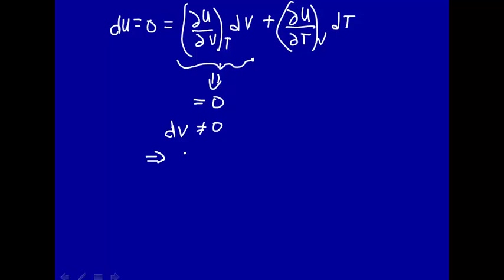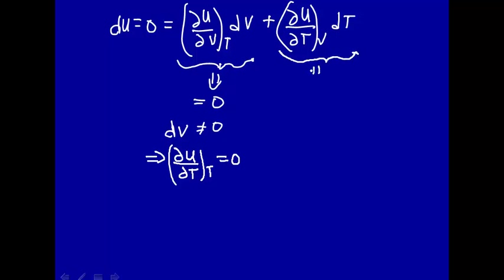This implies that the first term must equal zero — that is, how u changes with volume at constant temperature equals zero. We also said that the second term has to equal zero, and we know that dT equals zero.